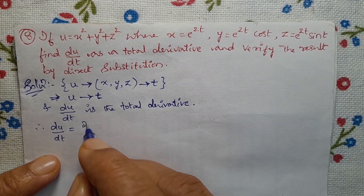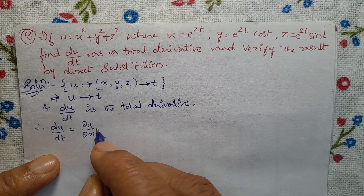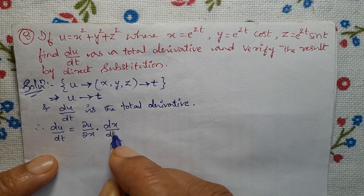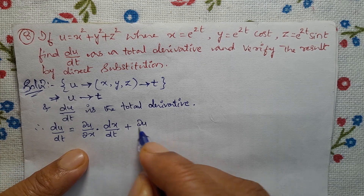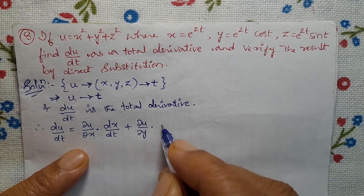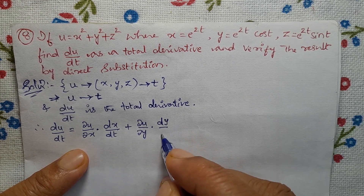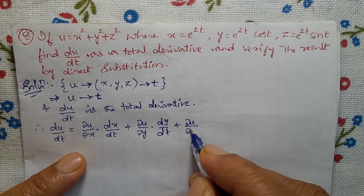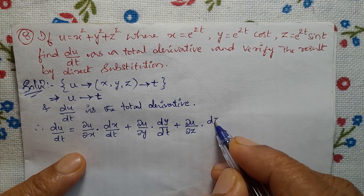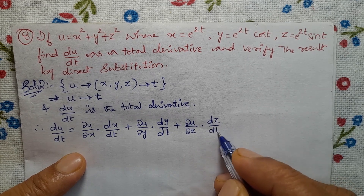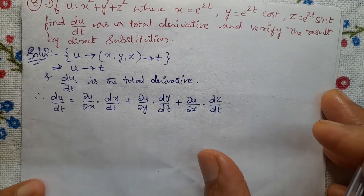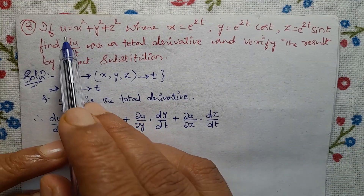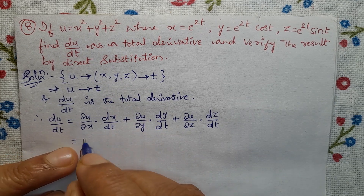Therefore, du/dt equals (del u / del x) · (dx/dt) plus (del u / del y) · (dy/dt) plus (del u / del z) · (dz/dt). So, partial differentiation of u with respect to x is 2x.